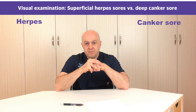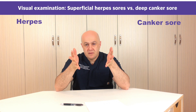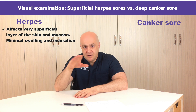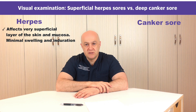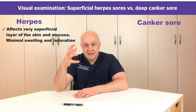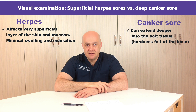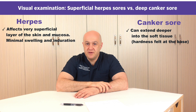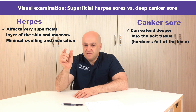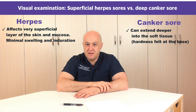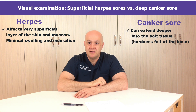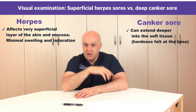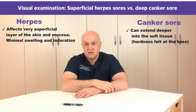Herpes sores, unlike canker sores, are very superficial — they affect only the very top layer of the skin and mucosa. Canker sore can go a little deeper inside. You can see the difference by pinching or touching the area — if you feel hardness under your finger, it means the lesion is penetrating deeper. With a canker sore, you feel that hardness when you touch the area.